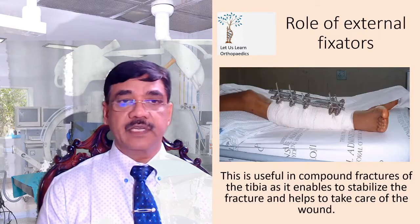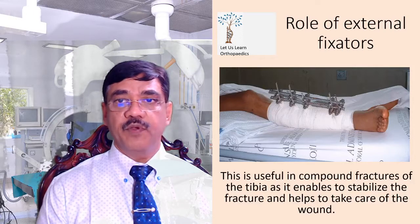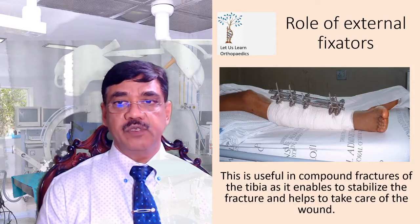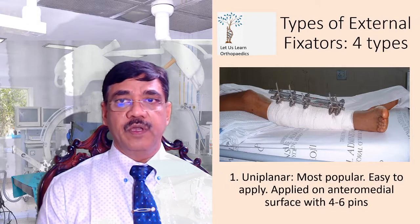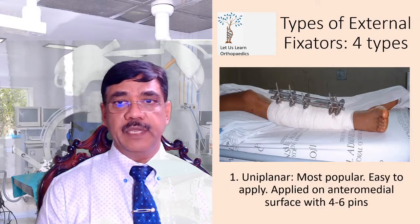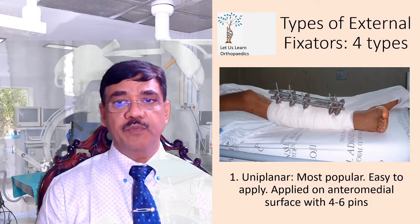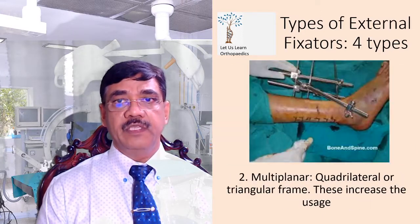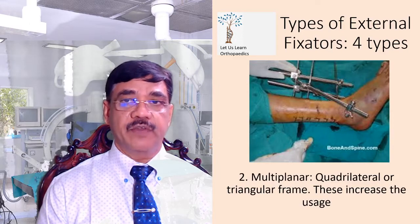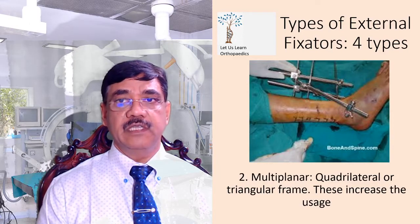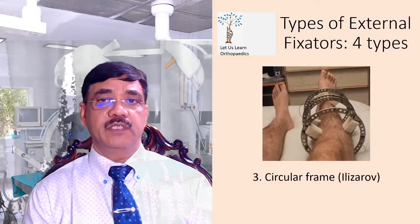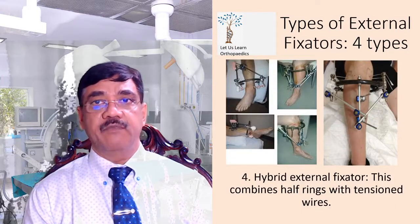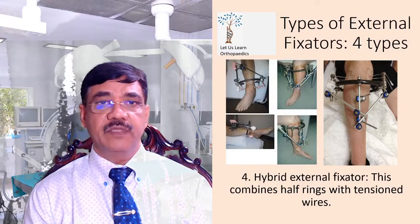External fixators also have a role, useful in compound fractures of the tibia as they stabilize fractures and help take care of the wound. There are four types: uniplanar — most popular, easy to apply on an anteromedial surface with four to six pins; multiplanar or quadrilateral rectangular frame; circular frame Ilizarov fixator; and hybrid external fixator, which combines half rings with tension wires.